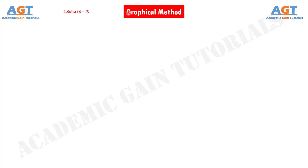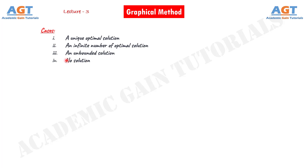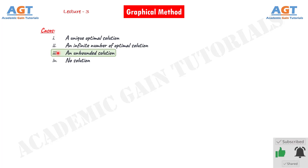As we have discussed in previous lectures, we usually get to see four types of cases in the graphical method. In lectures 1 and 2, we discussed how to solve and get a unique optimal solution and an infinite number of optimal solutions for a linear programming problem using the graphical method. We have covered the first and second cases in our previous two lectures, and in this lecture we will discuss the third case and see how to solve a linear programming problem to get an unbounded optimal solution by graphical method.